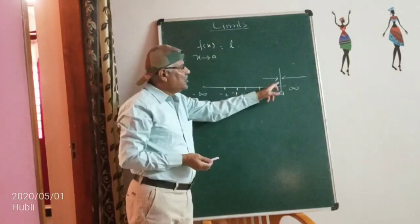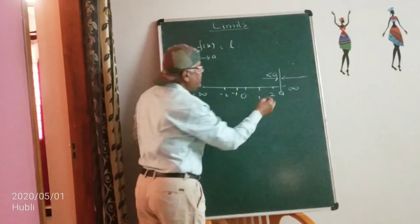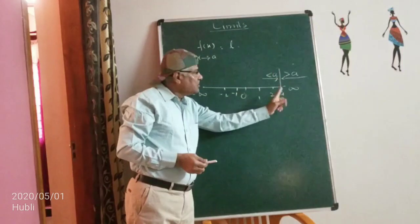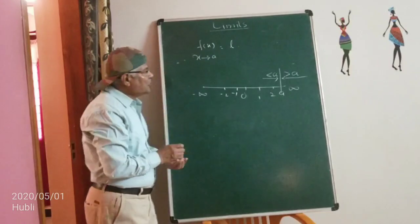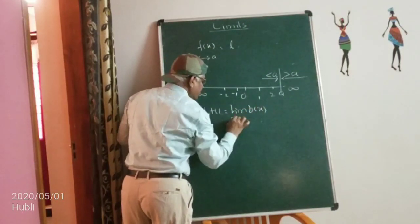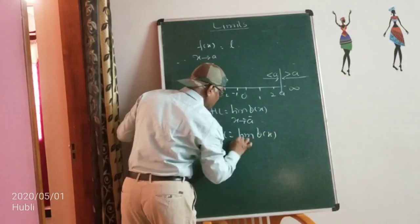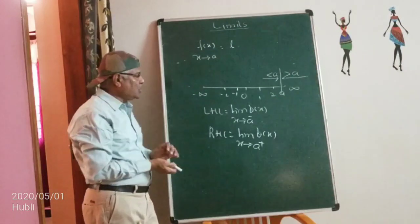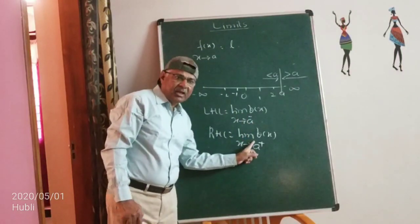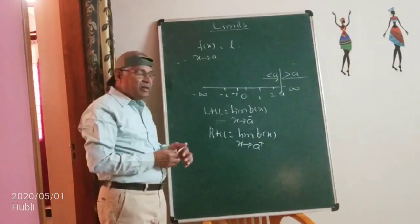When approaching from the left hand side, you approach through values less than a — that is the left hand limit. When approaching from the right hand side, you approach through values greater than a — that is the right hand limit. Suppose l₁ = limit f(x) as x→a⁻ (a minus means a value less than a) and l₂ as x→a⁺ (a plus means a value greater than a). When both values are equal, we say the limit exists; otherwise the limit does not exist.